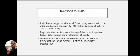Background: India has emerged as the world's top dairy nation, with milk production crossing 21.06 million tons in 2021-22. Reproductive performance is one of the most important factors determining the profitability of herds. Anestrus is one of the major causes of economic loss both in the beef and dairy industry.